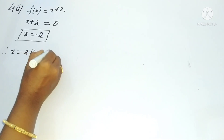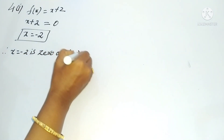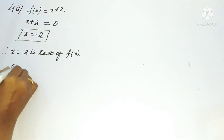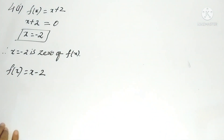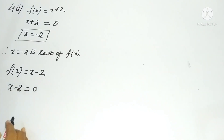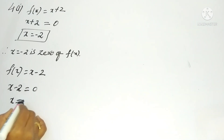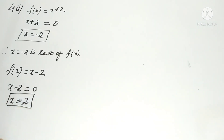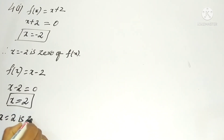The second problem: f(x) = x - 2. Take the polynomial x - 2 and equalize to zero, then transpose the constants — that means all terms except the variable. So x = +2. Therefore x = 2 is the zero of f(x).